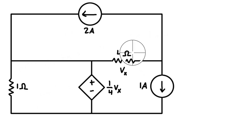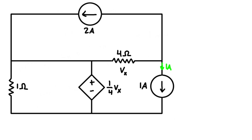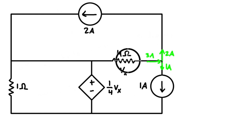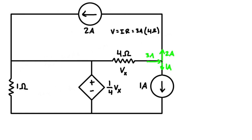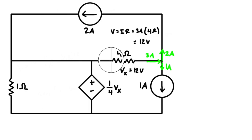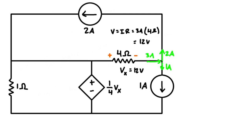We want to figure out the controlling voltage Vx. At this junction, one amp flows out from the independent current source, and two amps flow out from the other, giving a total of three amps out. By KCL, three amps must come in through this branch. Applying Ohm's law: V = IR = 3A × 4Ω = 12 volts, so Vx = 12V. Current enters the positive side of the resistor. Multiplying one-quarter by 12V gives three volts for our dependent voltage source.